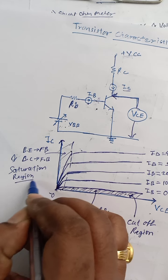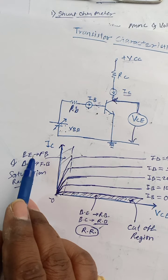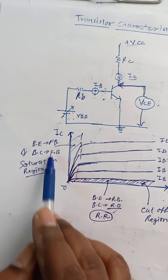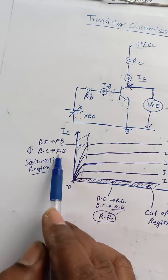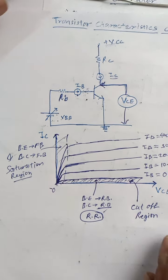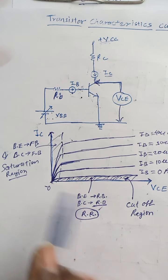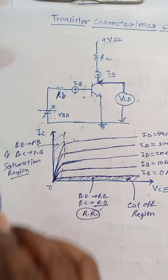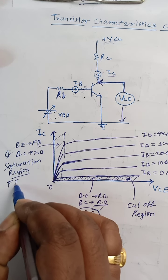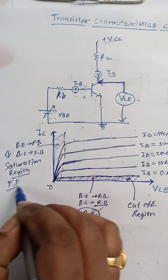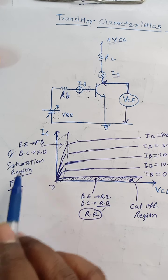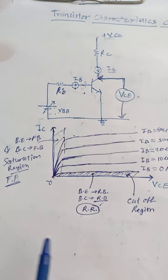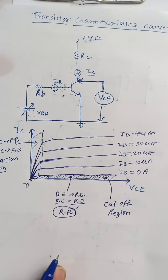In the saturation region, both base-to-emitter and base-to-collector junctions are in forward bias. This is already known as the FF condition. In this FF condition, base-to-emitter junction is forward biased and base-to-collector junction is also forward biased.